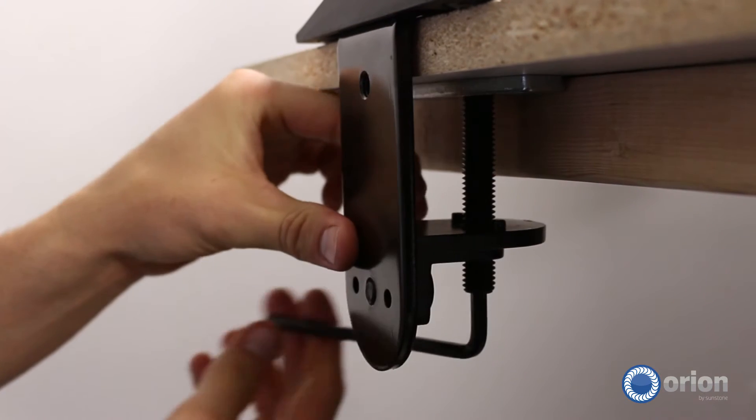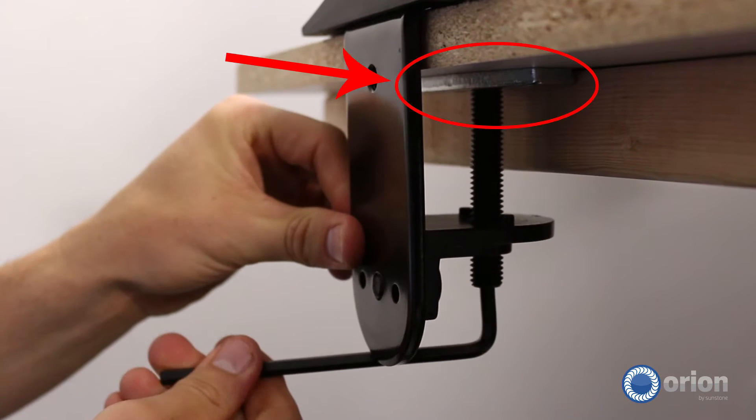Align the arm base screw with the center hole of the included steel plate and then tighten. This steel plate will help spread the weight of the system and provide more support.